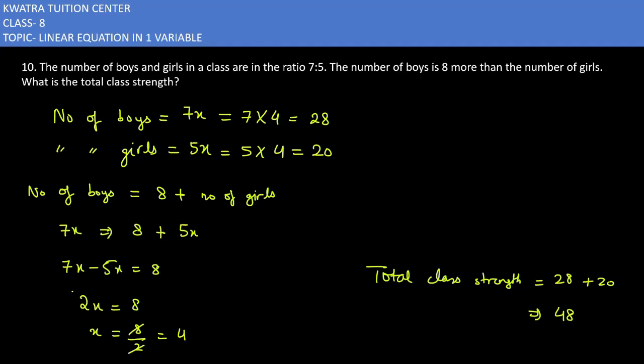We have converted the ratio into the variable form and then we have made an equation from that. And we have made an equation by which value we have found out? x.